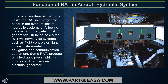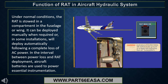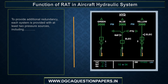Some RATs produce only hydraulic power, which in turn is used to power an electrical generator. Under normal conditions the RAT is stowed in a compartment in the fuselage or wing. It can be deployed manually when required, or in some installations will deploy automatically following a complete loss of AC power. In the interval between power loss and RAT deployment, aircraft batteries are used to power essential instrumentation.